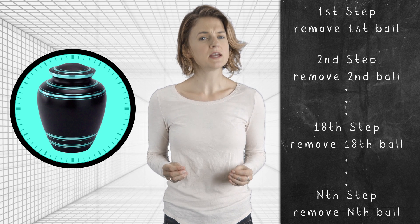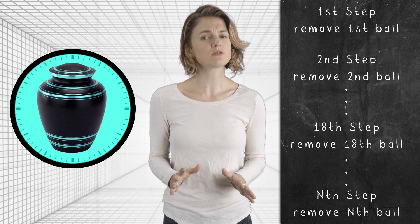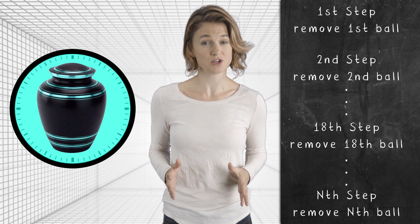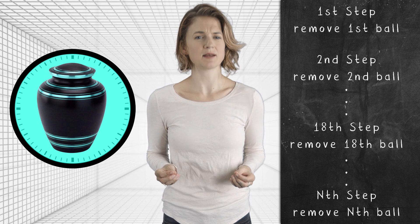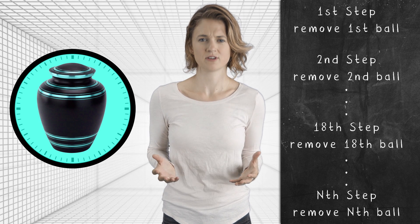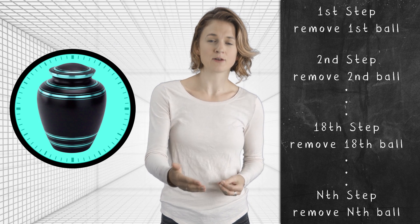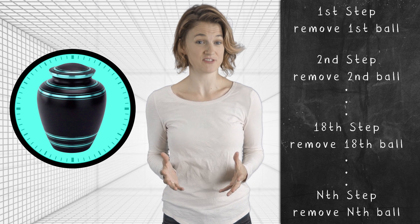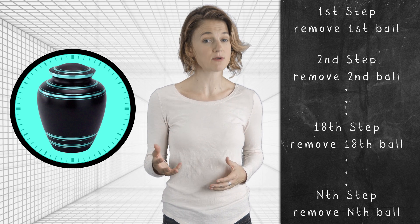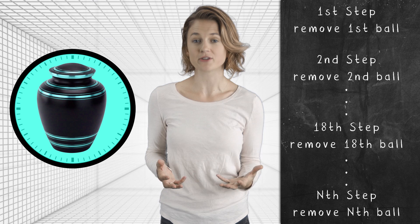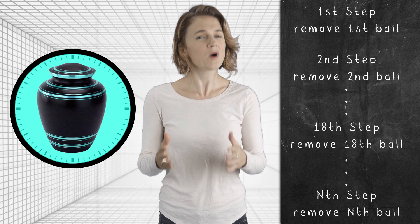Of course, if you just added nine balls each step, the urn would contain infinitely many balls at noon. That's what makes this setup feel so paradoxical. The order in which we add and remove balls makes a big difference. It determines whether there are zero or infinitely many balls in the urn at noon.